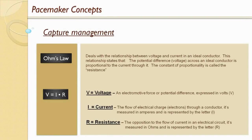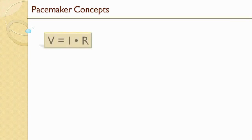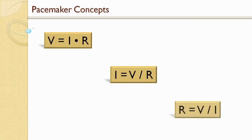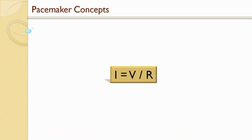Another term we use for resistance when talking about pacemakers is impedance. A lot of people have a tendency to get current, represented by the letter I, mixed up with impedance, which is actually represented by the letter R for resistance. Some other forms of Ohm's Law are: current equals voltage divided by resistance, and resistance equals voltage divided by current. As the person checking the pacemaker, we set the voltage and don't have control over resistance, so the thing we're interested in is current. If we set the voltage and know our impedance, we can measure the current drain on the battery.